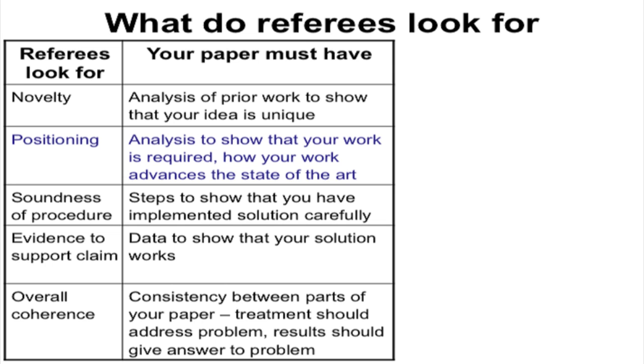Soundness of the procedure and evidence to support that the solution works as you have claimed are the next two things needed in a good paper. And finally, what is required is overall coherence or consistency between the parts of the paper. Often as referees we find that the paper starts out saying that it is going to do X, finally does some Y, and reports some results for Z. Such a paper is a clear reject and the effort put in by the authors goes to waste.